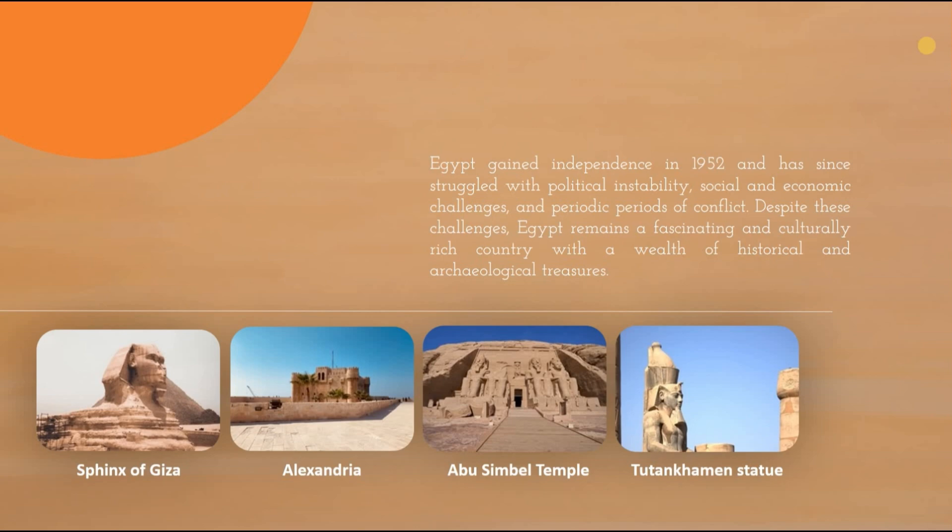Some of Egypt's symbols include the Great Sphinx, the ancient city of Alexandria, and the magnificent temples of Abu Simbel.